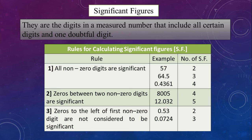Rule number 2. Zeros between two non-zero digits are significant. So, in a digit 8005, significant figures are 8, 0, 0 as well as 5. Rule number 3. Zeros to the left of the first non-zero digit are non-significant. So, in 0.53, significant figures are only 5 and 3. 0.0724, significant figures are only 7, 2 and 4. The two zeros are non-significant.